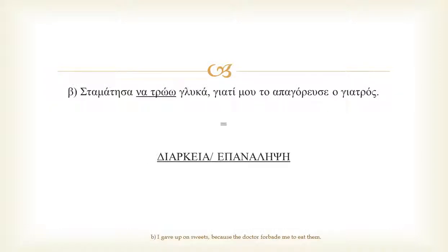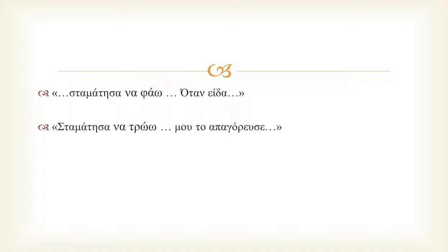Whereas in the second example, we are using the continuous subjunctive form, να τρώω, because eating will not be happening from now on — I gave it up. We use the simple subjunctive form for actions happening once at one given time, and the continuous form for repetitive or ongoing actions.